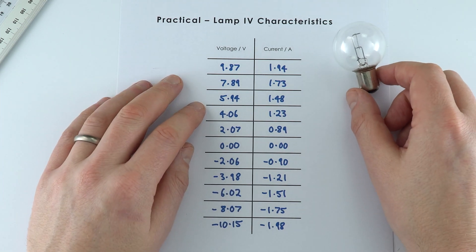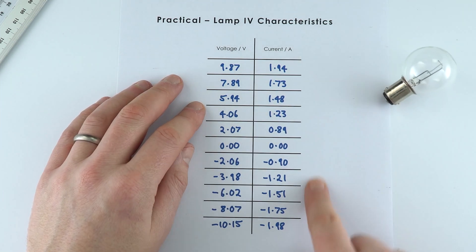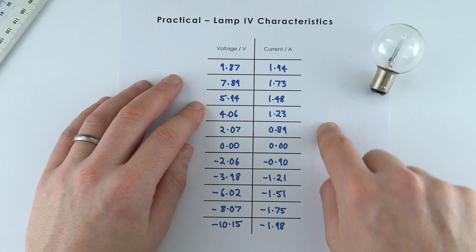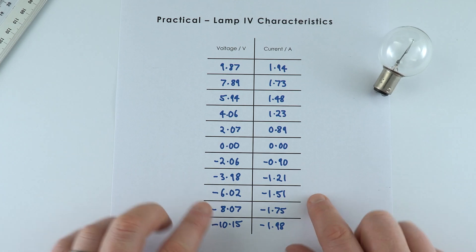So what I'm going to do is plot this on a graph where we have current on the y-axis, voltage on the x-axis. We're going to have both positive and negative values for both.